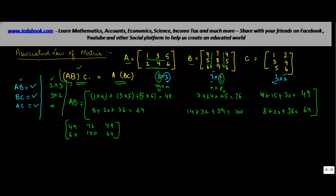So, we get AB is equal to 49, 64, 76, 100, 49, and 64. Now, AB into C. So, we've got AB here, into C. What is C? C is 1, 3, 5, 2, 4, 6. The order of this is 2 into 3. Here it is 3 into 2. So, what will be the order of the resulting matrix? 2 into 2.